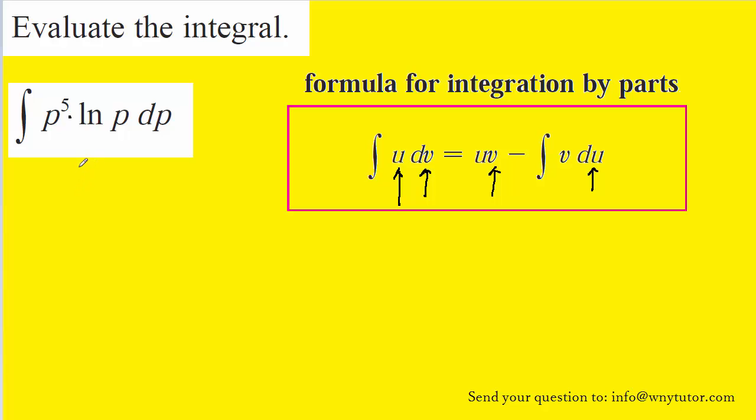Now consider that the derivative of p to the fifth is five p to the fourth. And then consider that the derivative of the natural log of p is one over p. It is arguable that the derivative of the natural log of p becomes simpler because the natural log is no longer present when you take the derivative. Whereas the derivative of p to the fifth really doesn't change that much. It becomes p to the fourth, which really isn't that much simpler than the original function p to the fifth.